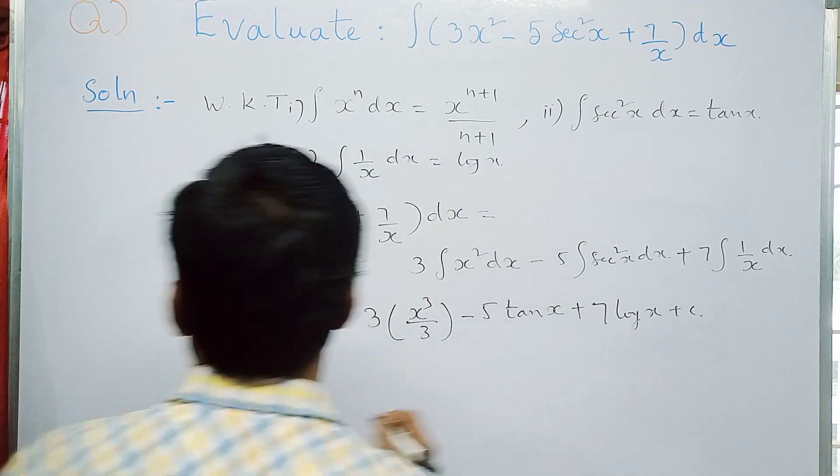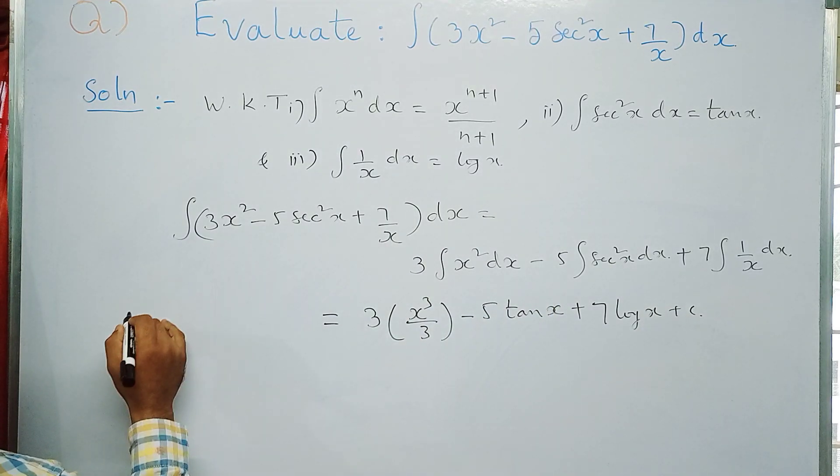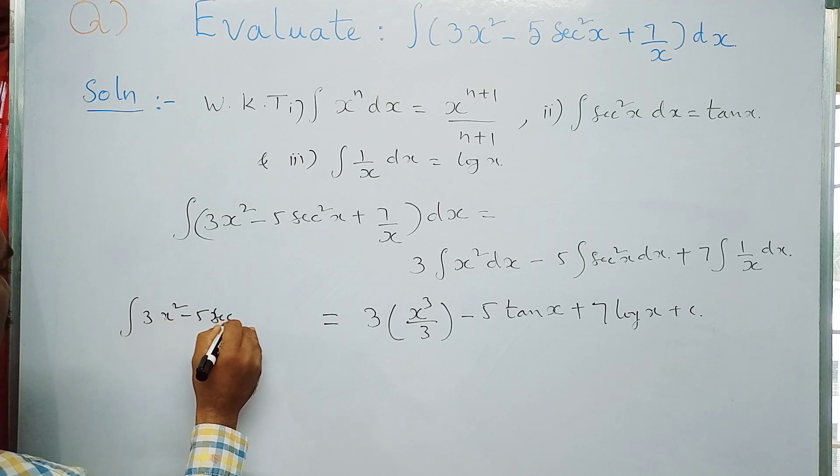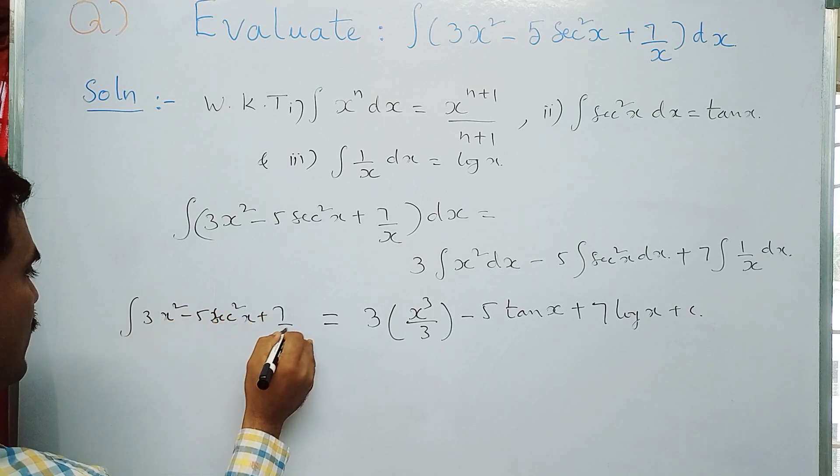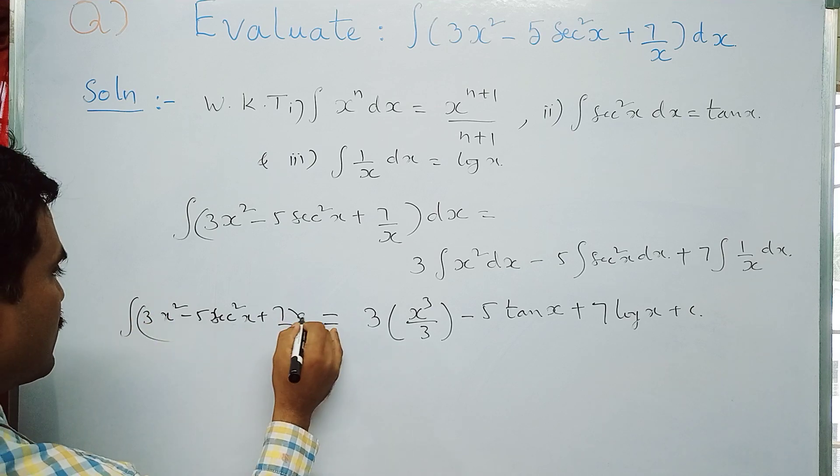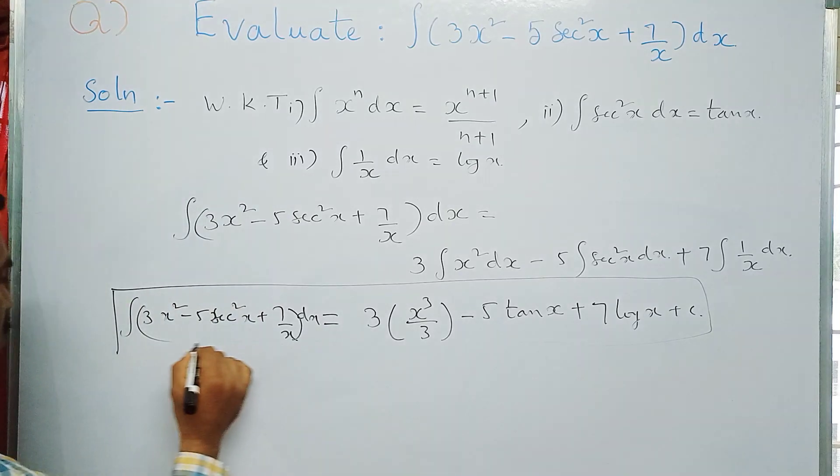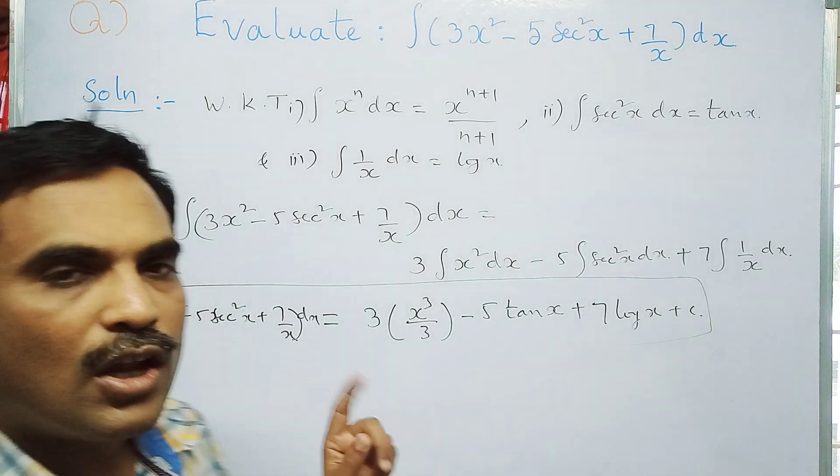So what is the left-hand side here? Integral 3x² minus 5 sec²x plus 7 by x dx. So this is how we need to solve the above problem. So this is the final solution.